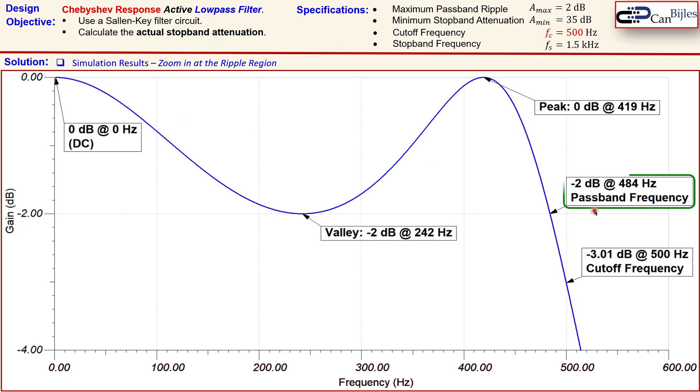Again, you see here the passband frequency, the cutoff frequency, but we see more. We see the peak and the valley. So there's a valley, so there is a minimum, which is at minus 2 dB at 242 Hz, and there is a peak, which is then 0 dB at 419 Hz.